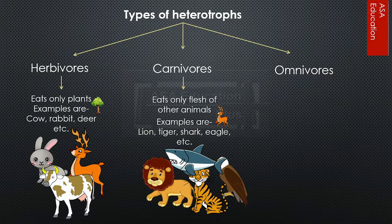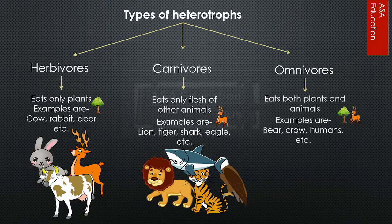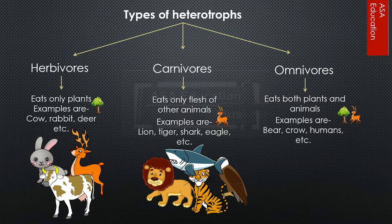Omnivores eat both plants and animals. Examples are bear, crow, humans, etc.